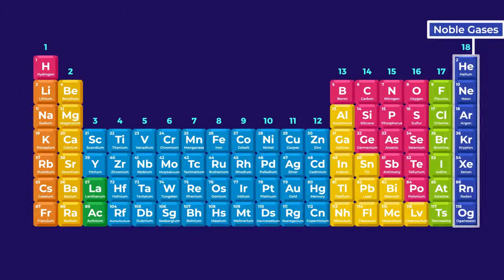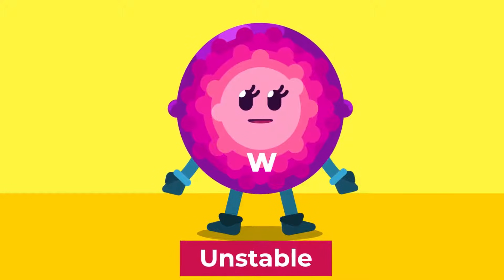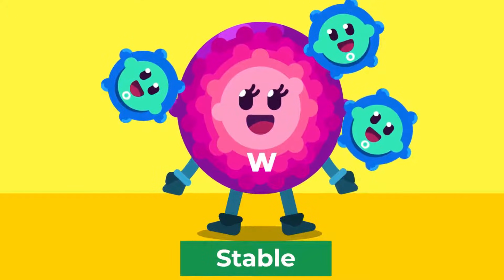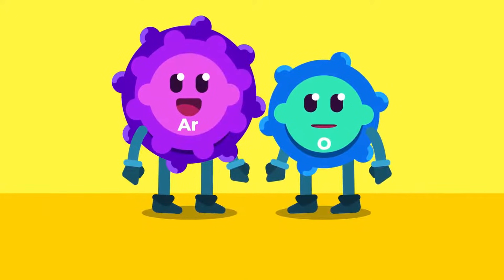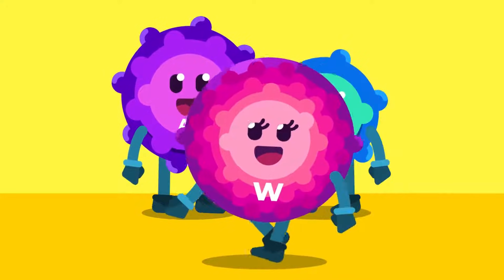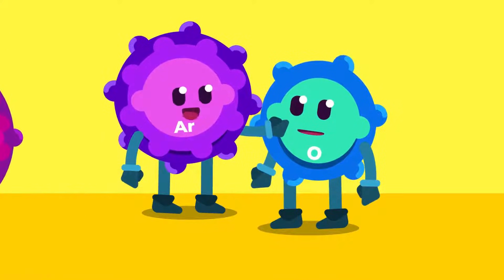The noble gases, also named as group 18 or 0, are the most stable group in the periodic table. All other elements react to attain the stability exhibited by the noble gases. These noble elements are incredibly unreactive and can even be used to prevent reactions from occurring.